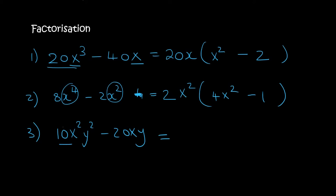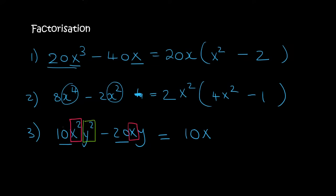In the third one, the largest number that can go into both is 10. For the x's, there are 2 in the first term and 1 in the second, so they have 1 in common. For the y's, there are 2 in the first and 1 in the second, so there is 1 y in common. What you are left with: in the first term you still have an x and a y, and in the second term you say minus 2.